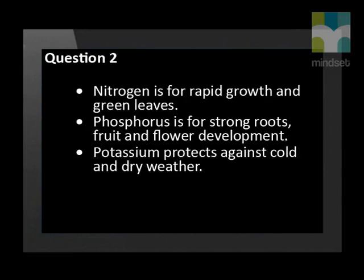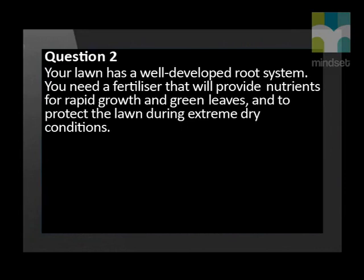Question 2. Here is some information for you. Nitrogen is for rapid growth and green leaves. Phosphorus is for strong roots, fruit, and flower development. Potassium protects against cold and dry weather. Your lawn has a well-developed root system. You need a fertilizer that will provide nutrients for rapid growth and green leaves, and to protect the lawn during extreme dry conditions.